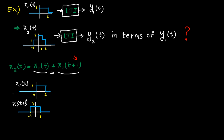Now, let's add them together. 0 plus 0, we get 0 here. 0 plus 1, we get 1 in this range. 1 plus 1, we get 2 here. 1 plus 0, we get 1 in this range. Finally, 0 plus 0, we get 0. So we can express X2(T) signal in this form.